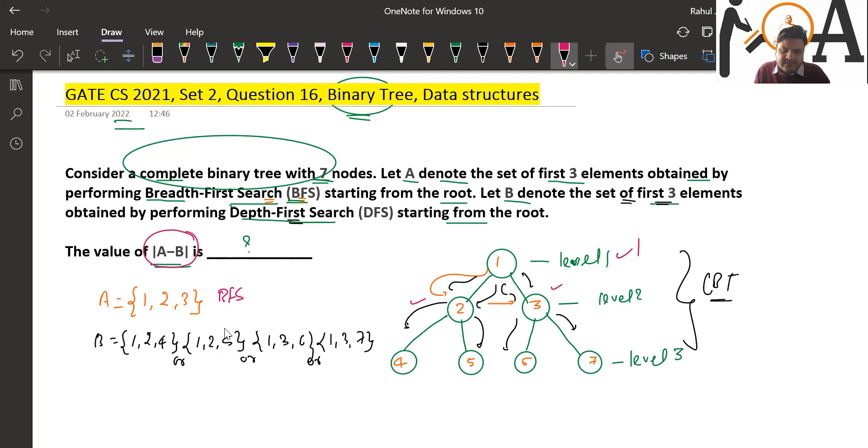So if I perform |A - B|, it would give me 1. You can simply say that it is going to give me 1.